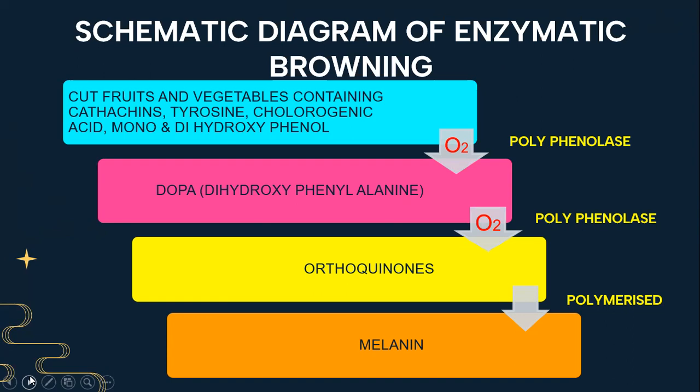The schematic diagram shows the enzymatic browning. The cut fruits and vegetables contain several phenolic compounds including catechin, tyrosine, chlorogenic acid, and mono and dihydroxyphenol. When these compounds are exposed to atmospheric oxygen, the polyphenolase enzyme catalyzes these compounds into DOPA, that is dihydroxyphenylalanine. This DOPA is further oxidized with the help of polyphenolase enzyme to form a compound called ortho-quinones. These ortho-quinones are polymerized several times and form a compound called melanin, which gives the brown color to the fruits and vegetables.